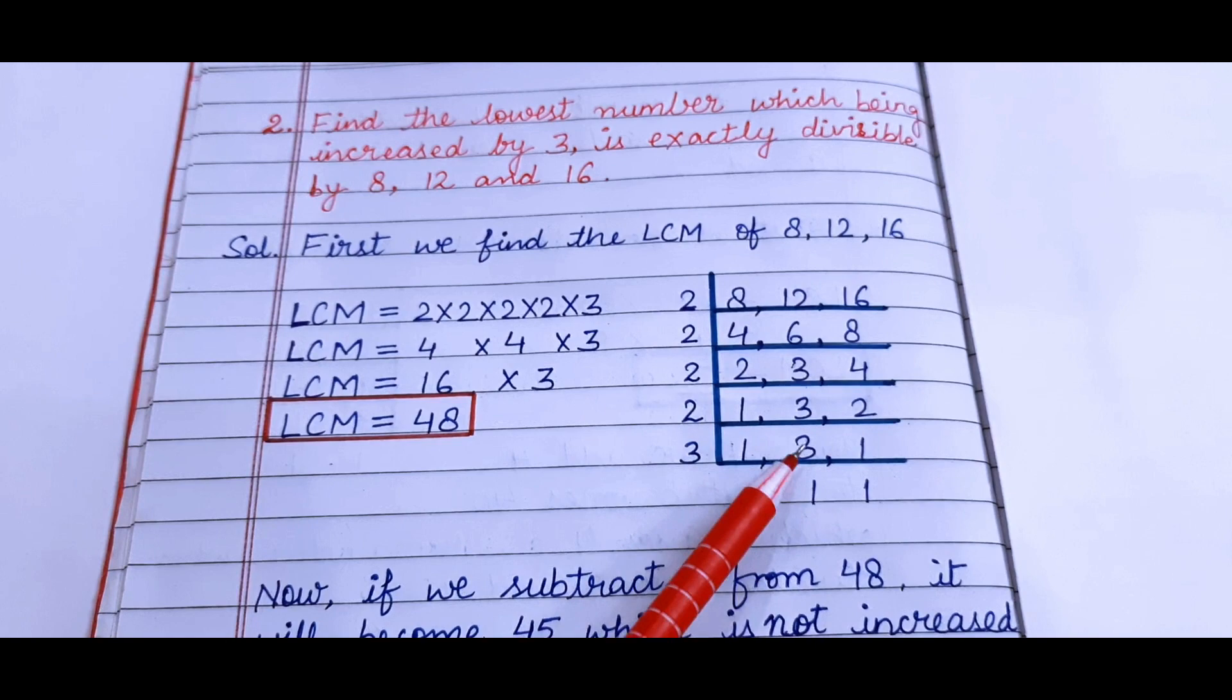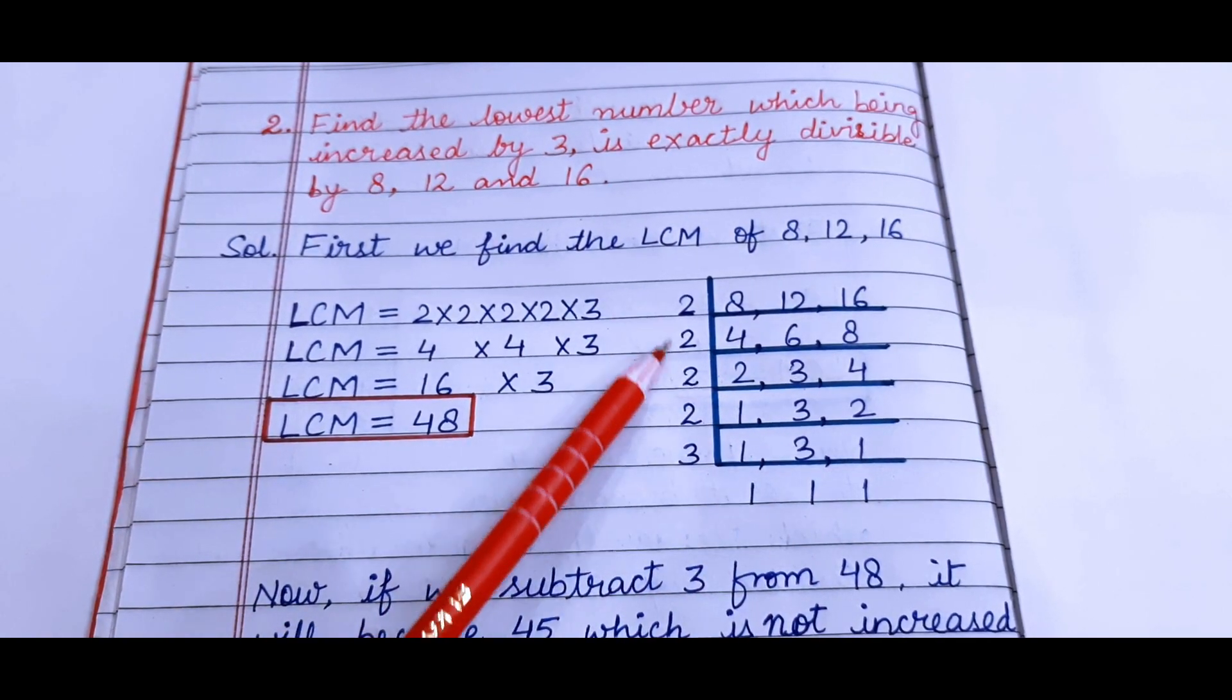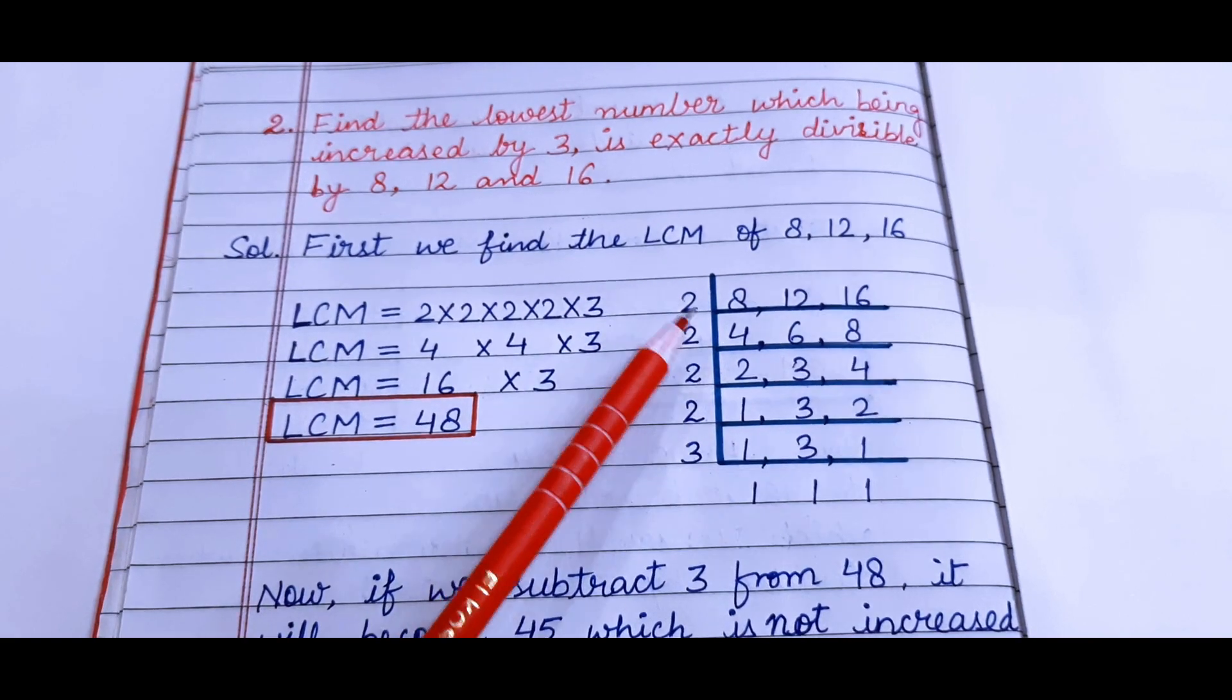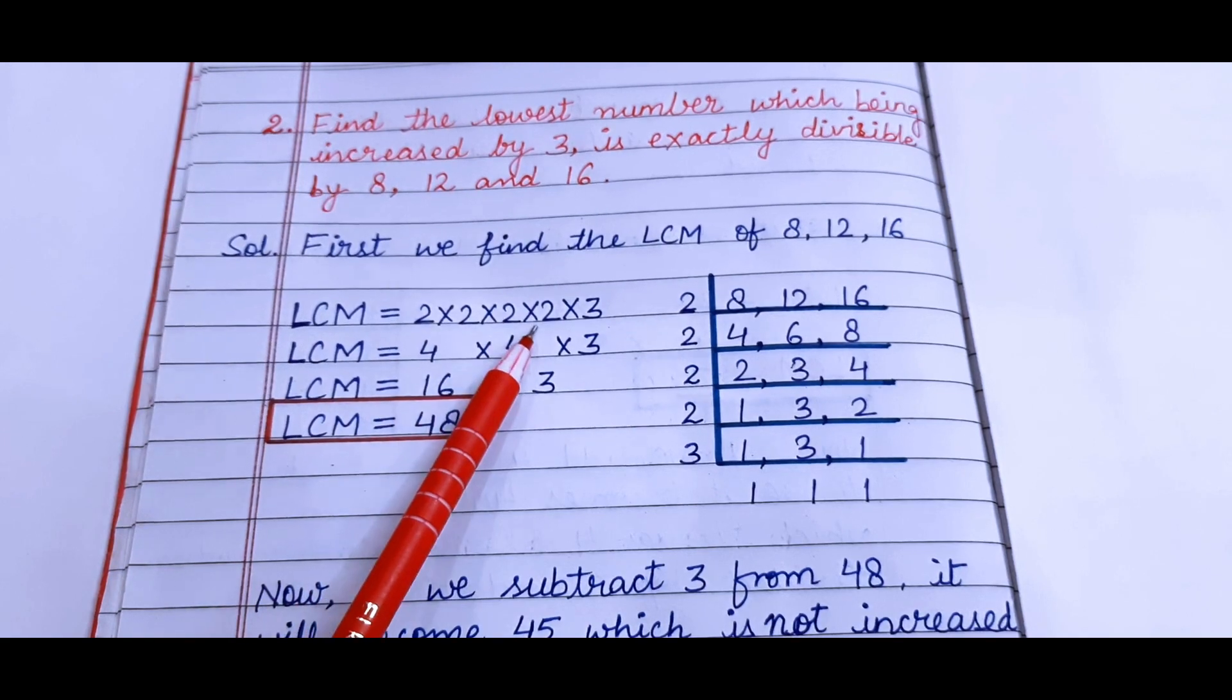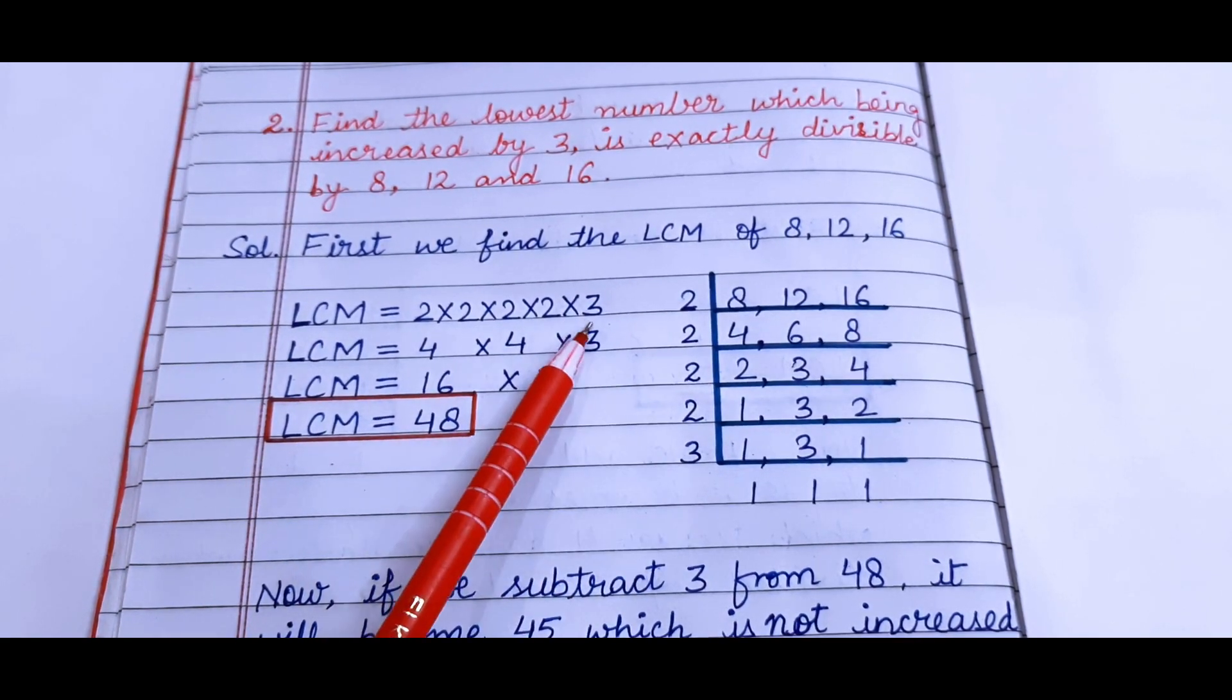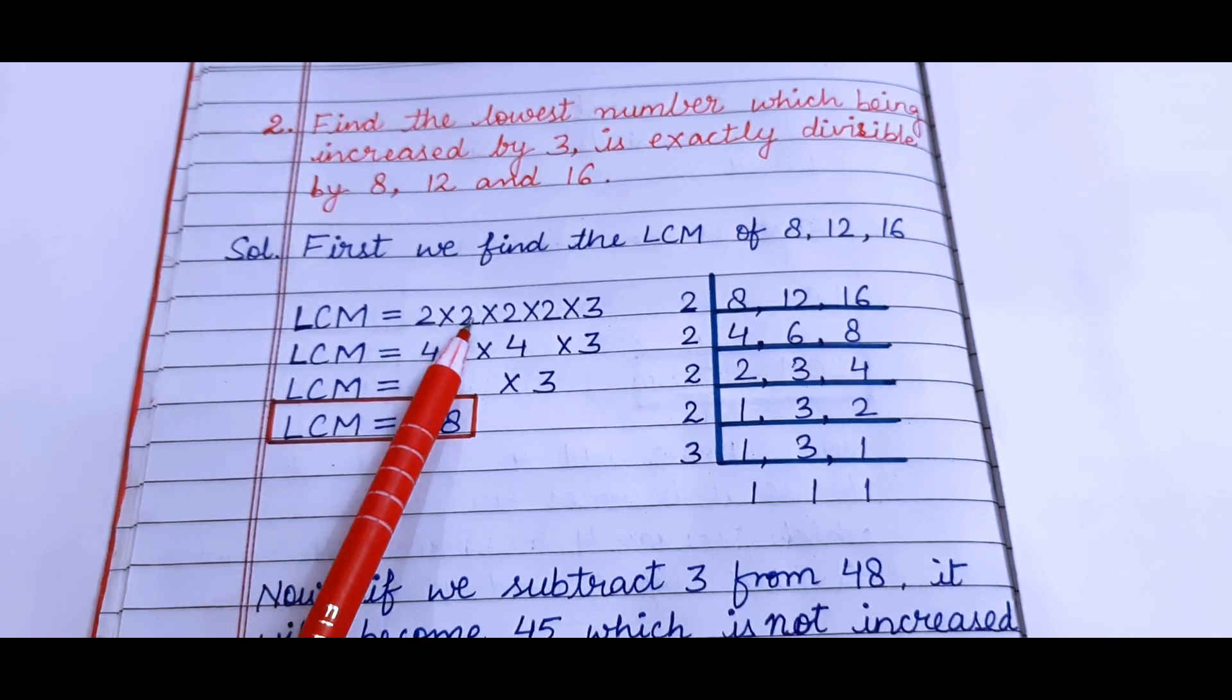So now 3 ones are 3 and 1 we have copied. Now the LCM will be 2 × 2 × 2 × 2, that is 4 times 2. See 1, 2, 3, 4 into 3, that is 1 times 3.